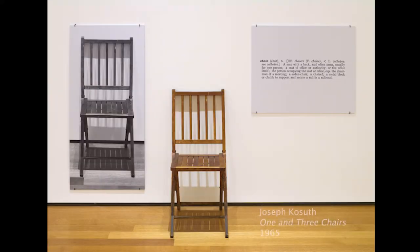Let's take a look at some artists who explore this idea of language. This image is of 'One and Three Chairs' by Joseph Kosuth. What are some of the things you see in this artwork? There's obviously a chair, there's a photo of the same chair, and a dictionary definition on the wall. How do you think all these connect? What does language have to do with this?